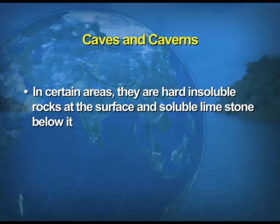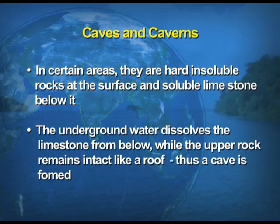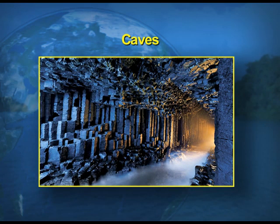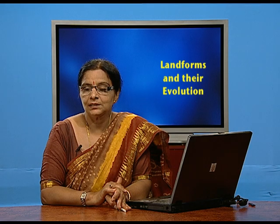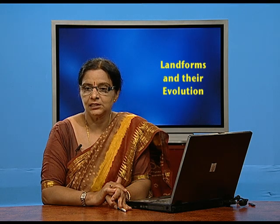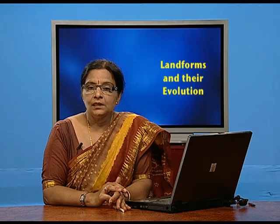Now we take up caves, which are formed by the erosional action of underground water. In certain areas, there are hard insoluble rocks at the surface and soluble limestone below. The underground water dissolves the limestone from below while the upper hard rock remains intact like a roof, and thus a cave or cavern is formed. The bottom gets eroded, but the top area, being harder rock, remains intact.